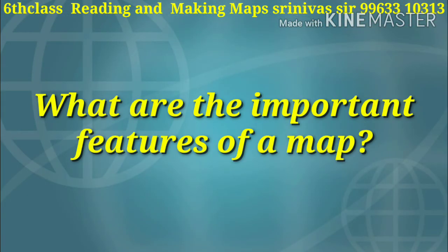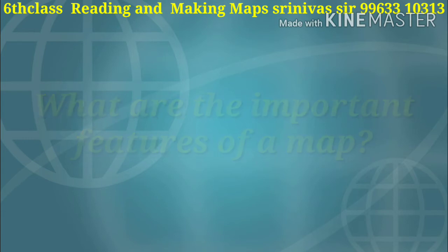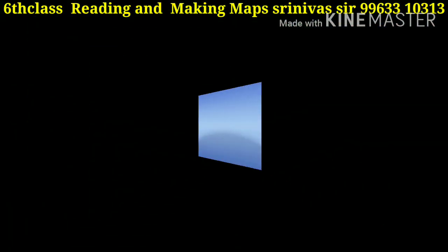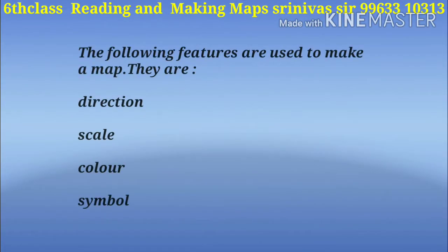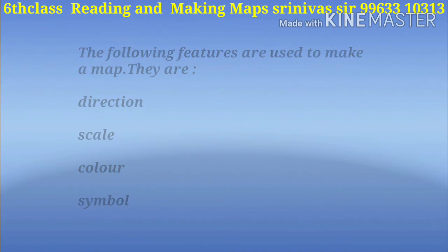What are the important features of a map? The following features are very important to make a map: direction, scale, color, and symbol.